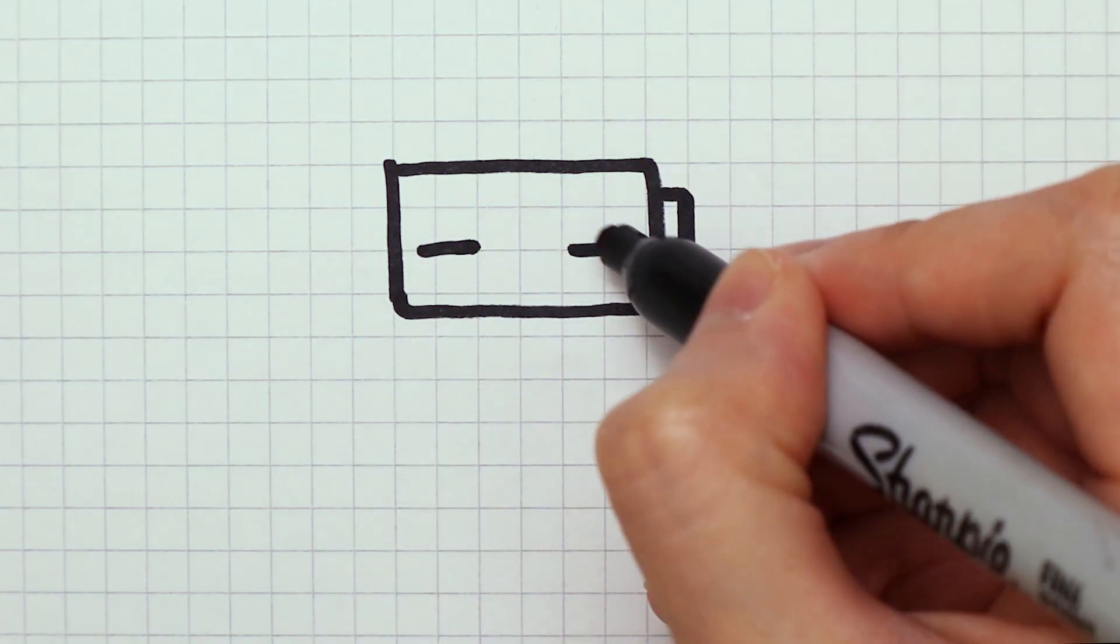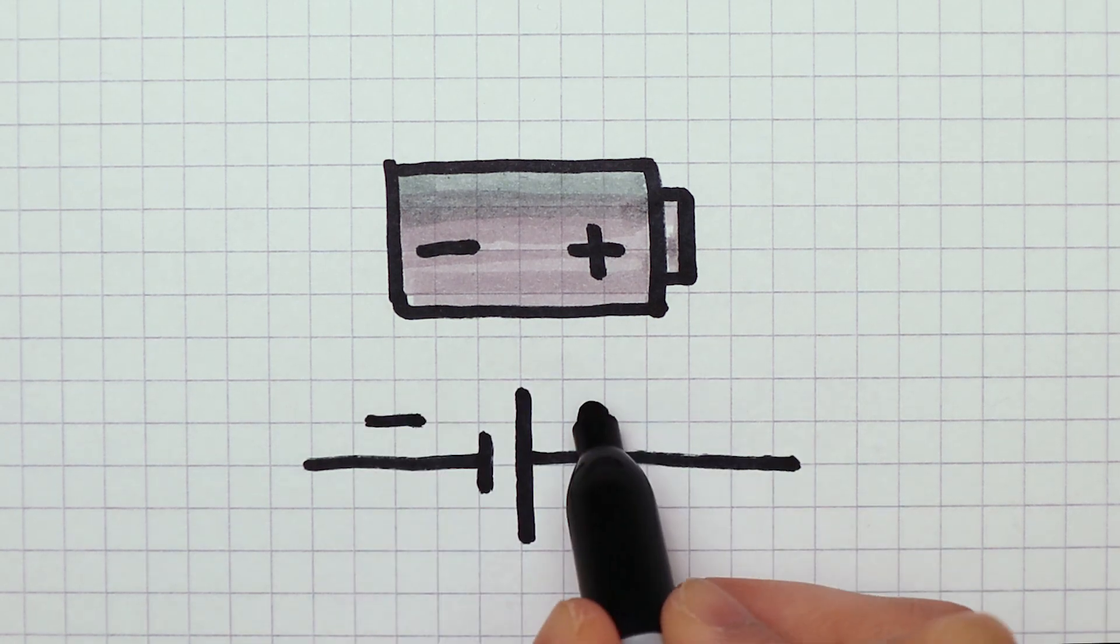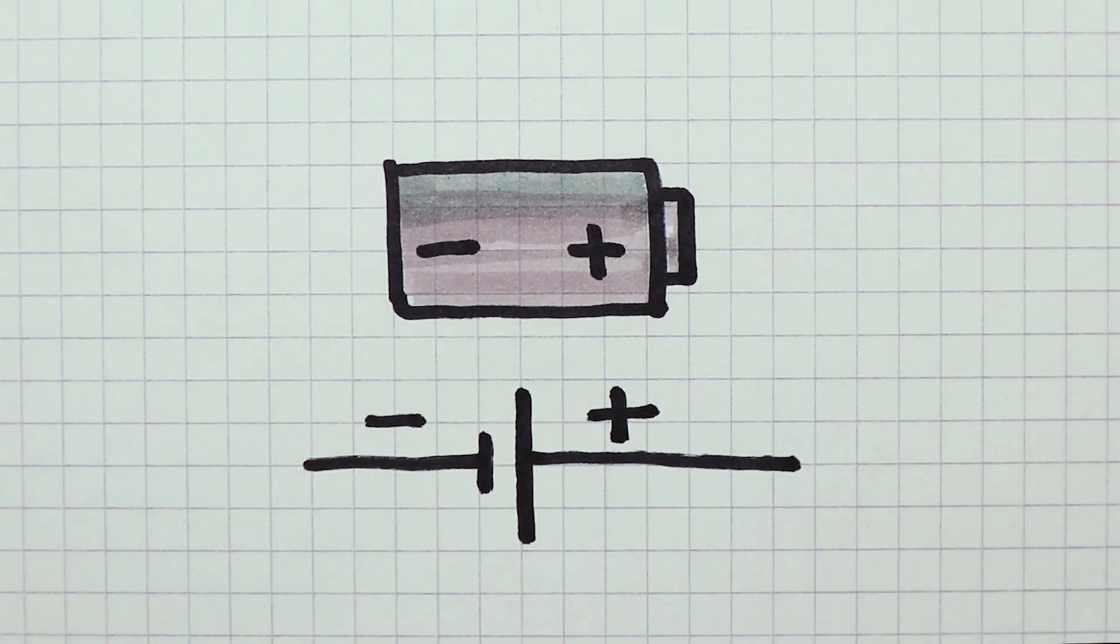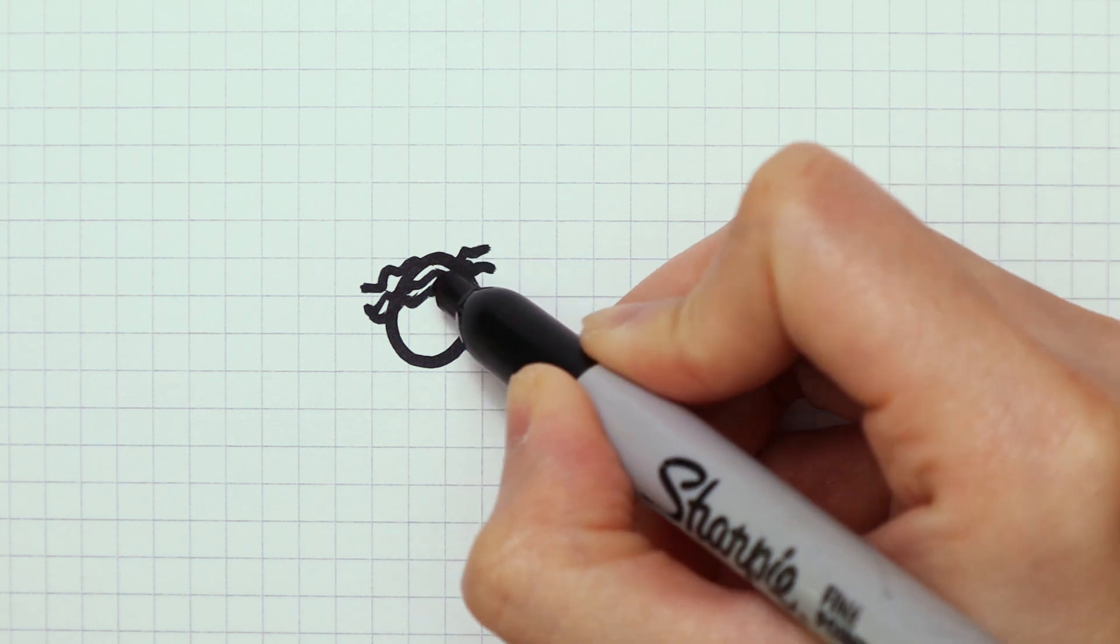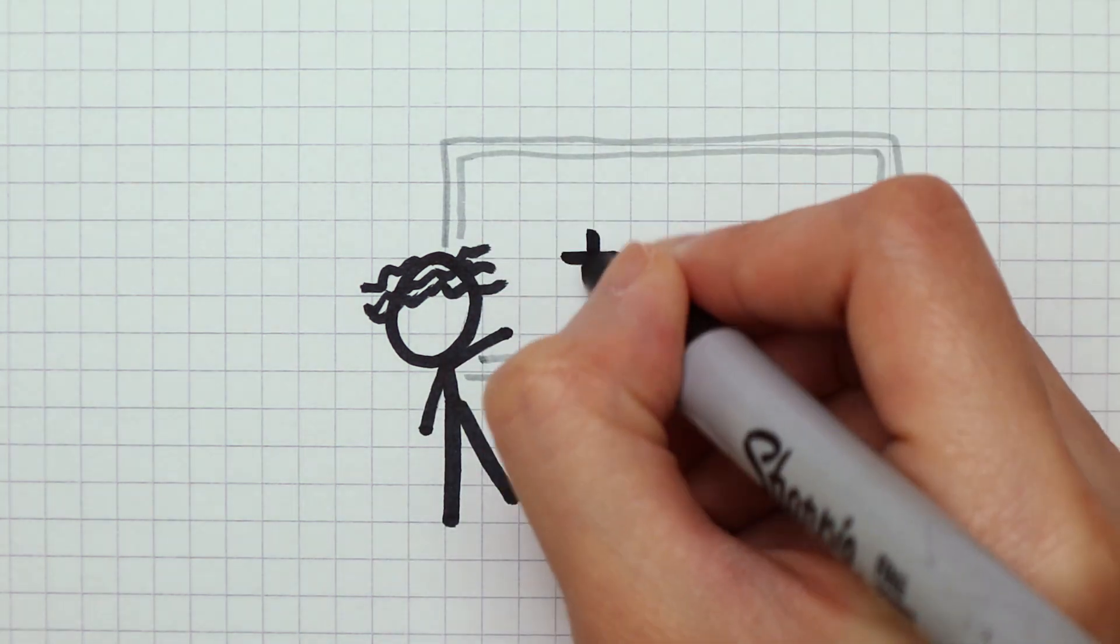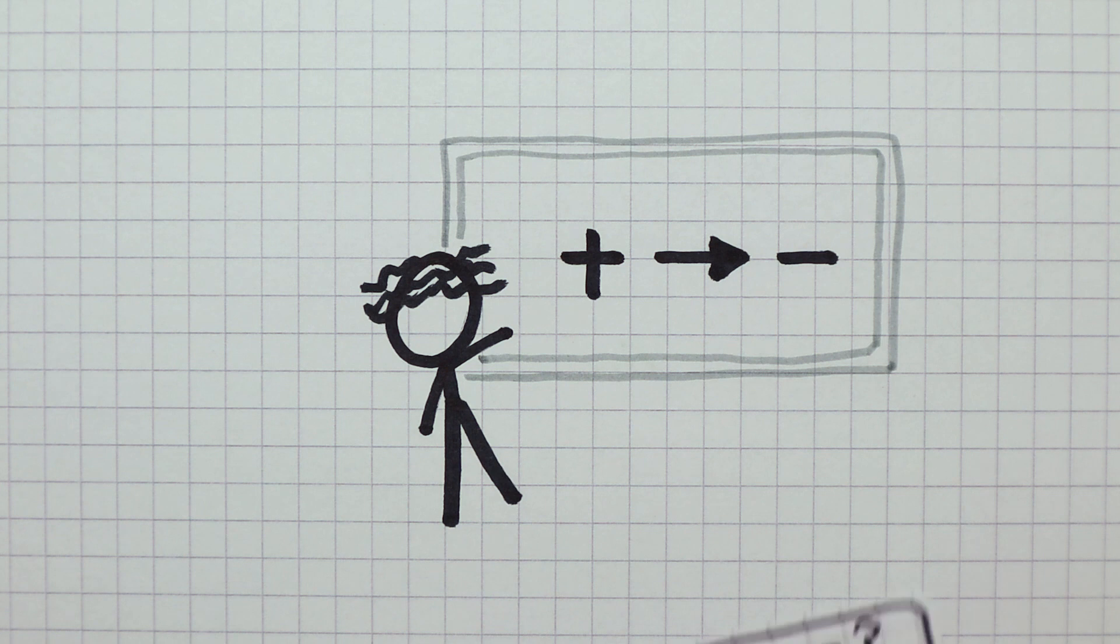Thanks to Mr. Franklin, we now have the terms positive and negative terminals of a cell or a battery. But he got one thing very wrong. He claimed that electricity goes from positive to the negative terminal.